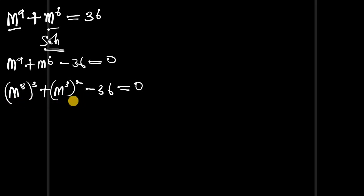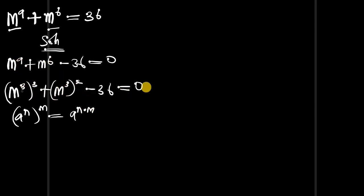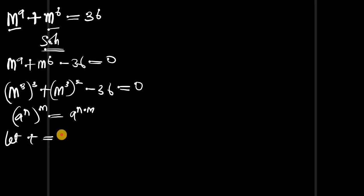What identity did I just use here? I made use of this identity: if you have a power n to the power m, it equals a power n times m. That means if you multiply 3 by 3 you have 9, and 3 times 2 you have 6 — and you get your original equation back. Now let t equals to m power 3.